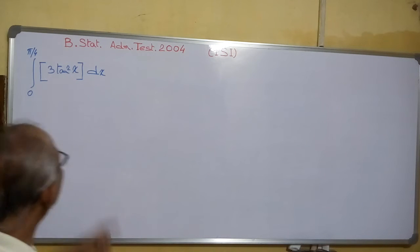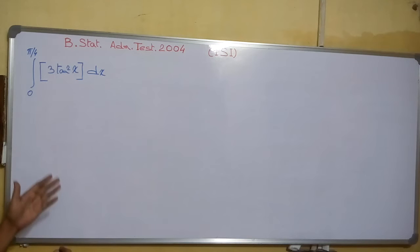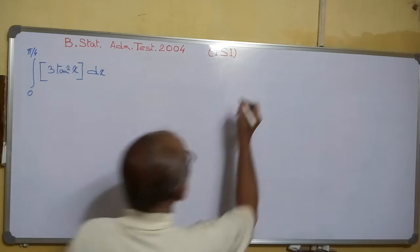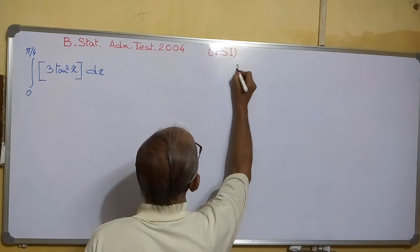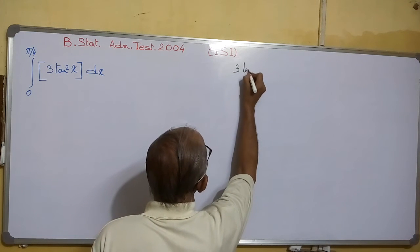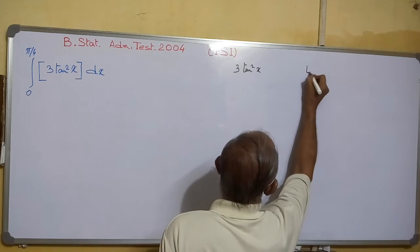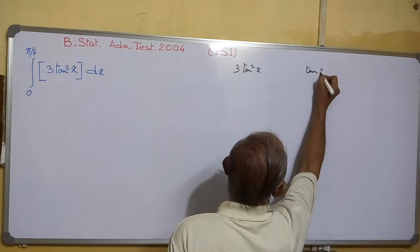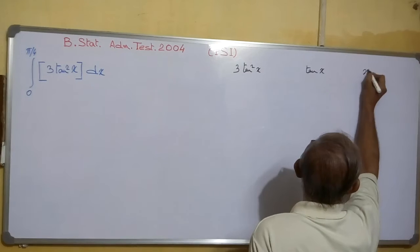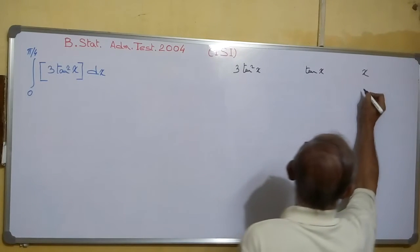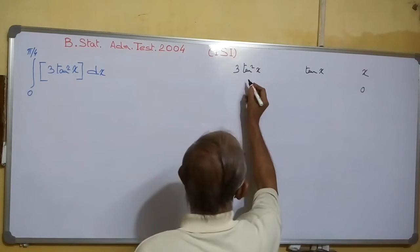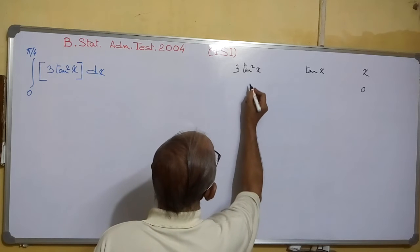Suppose here I am showing you how to solve this type of sums. You can write 3tan²x, tan x, and x.